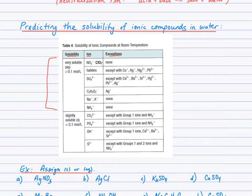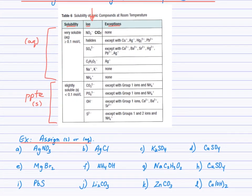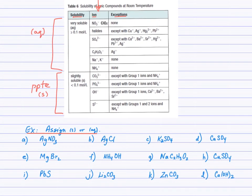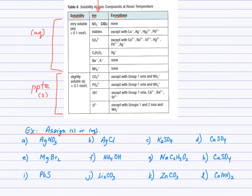Under the solubility column there are really two choices: compounds that are very soluble or compounds that are slightly soluble. Precipitates exist in the slightly soluble category — we use the subscript S for solid. If very soluble, the ionic compound dissolves in water and is marked AQ. We'll use these solubility guidelines to assign either S or AQ to twelve compounds.